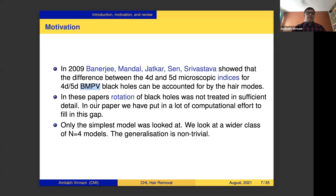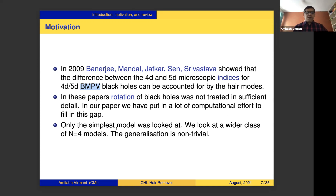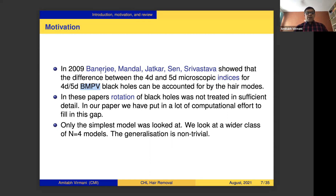The BMPV black hole is a rotating supersymmetric black hole, and the fact that a rotating supersymmetric black hole exists was a big surprise when the solution was discovered in the late 1990s. Textbooks like Hawking and Ellis state that all rotating black holes have ergo regions, making it seem impossible to construct a supersymmetric black hole solution. Since its discovery the BMPV black hole has been a topic of discussion in a variety of contexts in black hole physics.